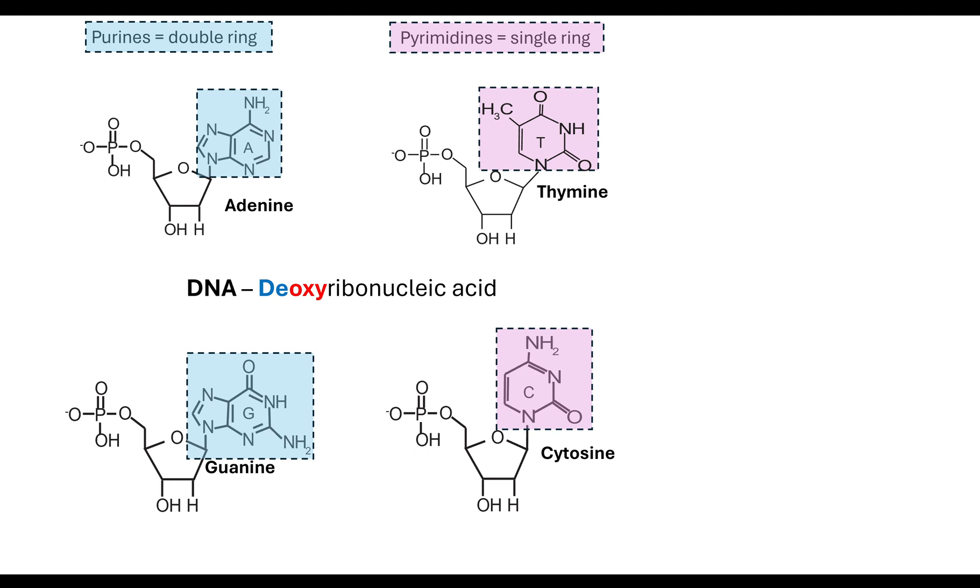I like to use my alphabet to help me here. I look at my pyrimidine has a Y in it. Thymine and cytosine also have Ys in their name. Therefore, that's my link to remind myself that thymine and cytosine are pyrimidines, making adenine and guanine my purines. Purines have my double ring, and pyrimidines have the single ring. There are four nitrogenous bases in our DNA nucleotides.